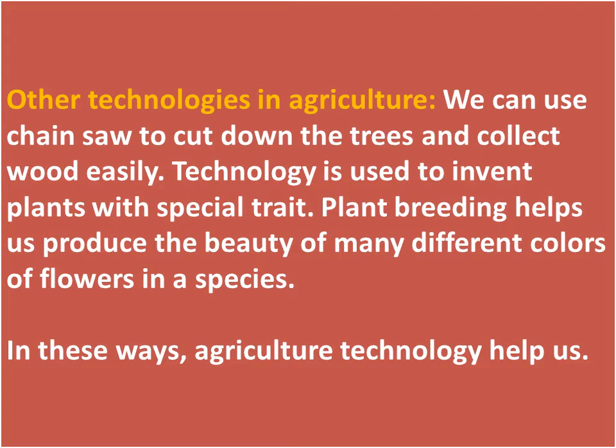Other technologies in agriculture: We can use a chainsaw to cut down trees and collect wood easily. Technology is also used to invent plants with special traits. Plant breeding helps us to produce many different colors of flowers in a species. In these ways, agricultural technology helps us.